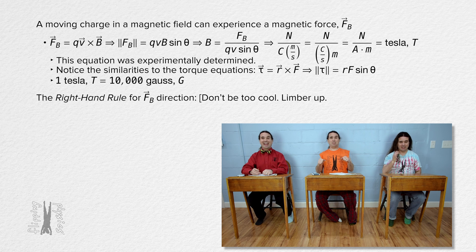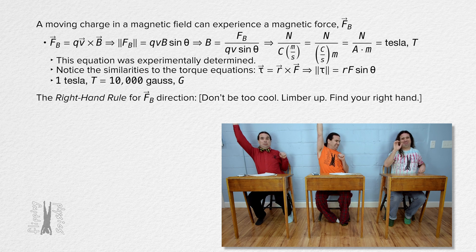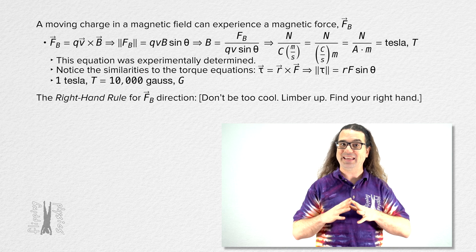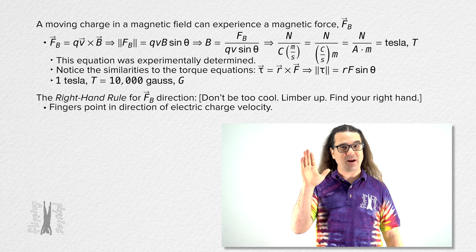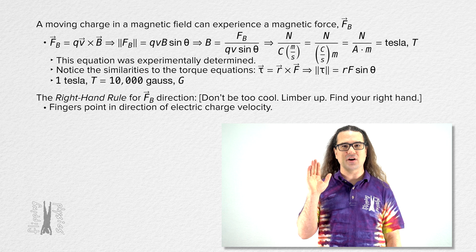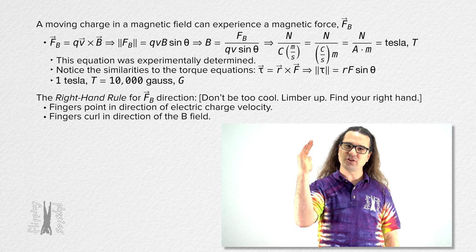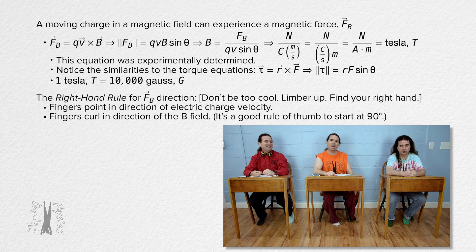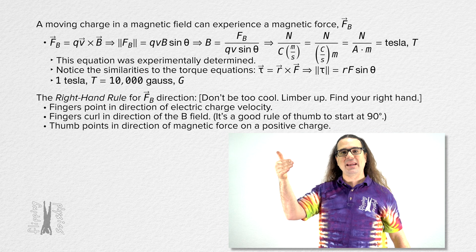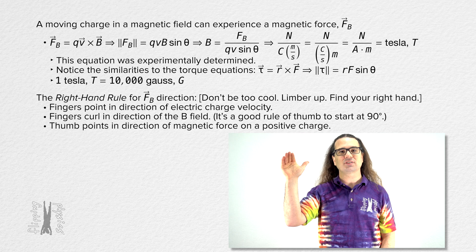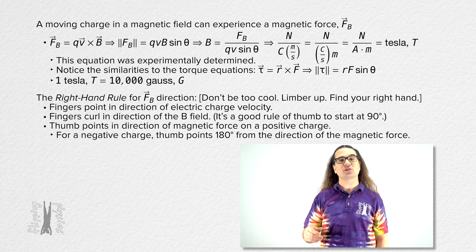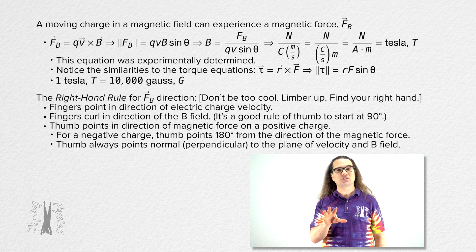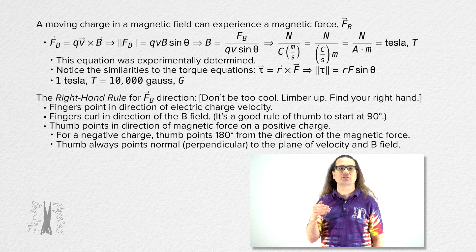Don't be too cool. Limber up and find your right hand. The right hand rule for the magnetic force is very much like the right hand rule for torque. Fingers of the right hand point in the direction of the velocity of the electric charge. Fingers of the right hand curl in the direction of the magnetic field — and it's a good rule of thumb to start at 90 degrees. Thumb on the right hand points in the direction of the magnetic force on a positive charge. For a negative charge, the thumb points 180 degrees from the direction of the magnetic force. Make sure your thumb points normal to the plane created by the velocity of the electric charge and the magnetic field.